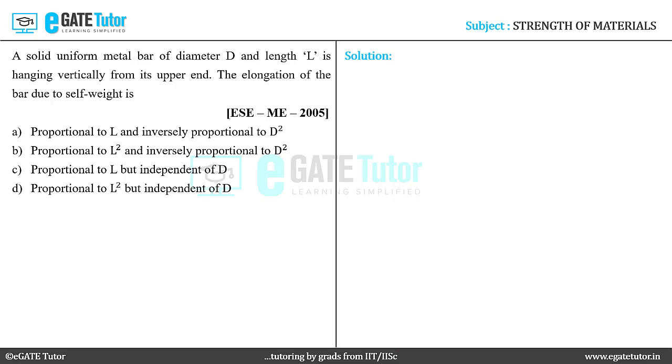A solid uniform metal bar of diameter D and length L is hanging vertically from its upper end. The elongation of the bar due to self-weight is?